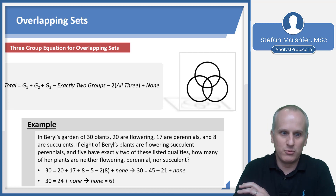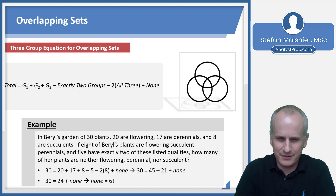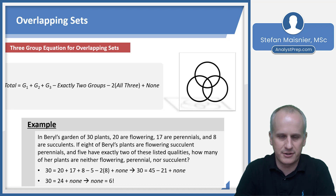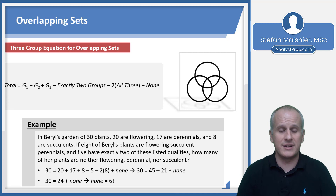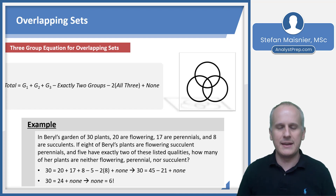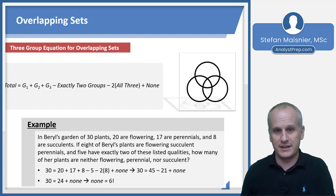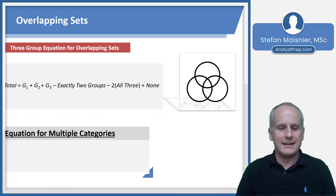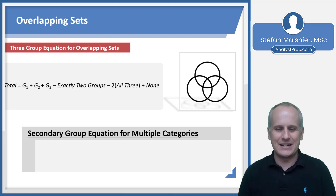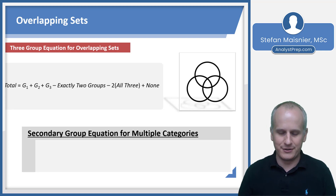This is going to be really complex and time-consuming if you try to do it with a Venn diagram. It's probably not something you'll see in the first half of your Executive Assessment, but it is the type of concept that could show up on a harder second section — definitely the type of logical problem used as a differentiator as you try to approach a score of 160. Now let's talk about the secondary group equation for multiple categories.